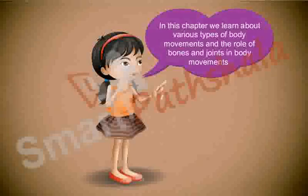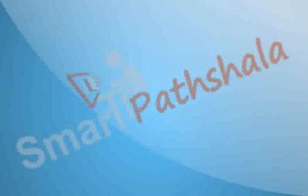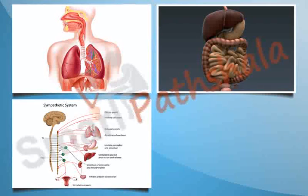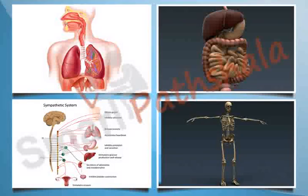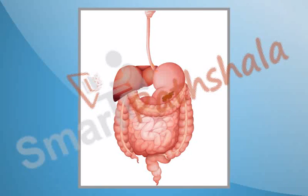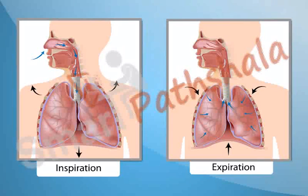In this chapter, we learn about various types of body movements and the role of bones and joints in body movements. There are several systems in our body like respiratory system, digestive system, nervous system, skeletal system, etc. Each system has some specific functions. For example, the function of the digestive system is to digest the food, and the function of the respiratory system is to produce energy by oxidizing the glucose.